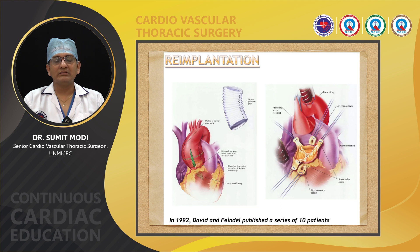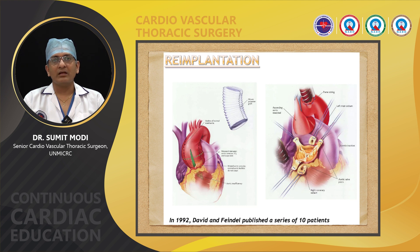Let us see the operative steps of the re-implantation of the aortic valve — valve sparing aortic root replacement by re-implantation technique. Cardiopulmonary bypass is set up by aortic and venous cannulation after systemic heparinization. The aorta is cross-clamped, the heart is vented via the right superior pulmonary vein, transverse aortotomy is performed, and after opening the aorta, retrograde cardioplegia is stopped and selective ostial cardioplegia is given to the left and right coronary artery. Once diastolic arrest of the heart is achieved, three commissural sutures are taken with a double-pledgeted suture.